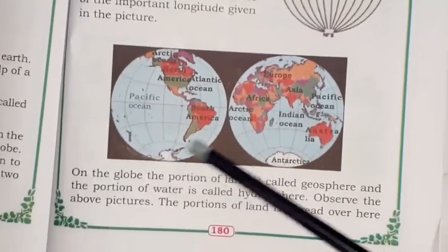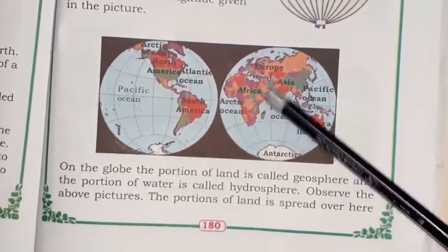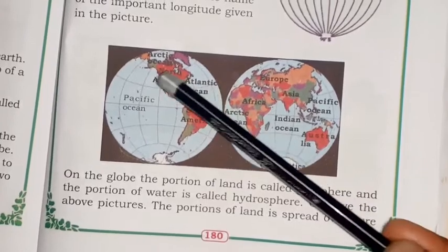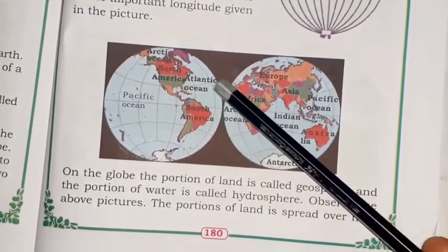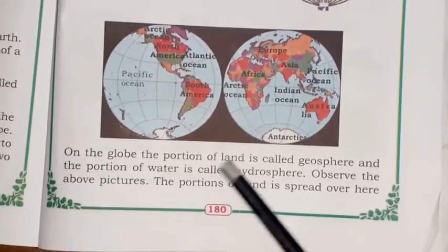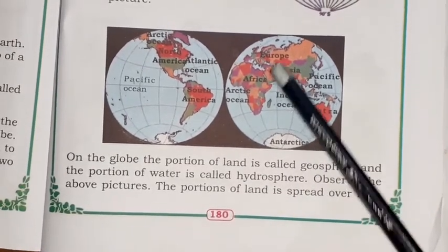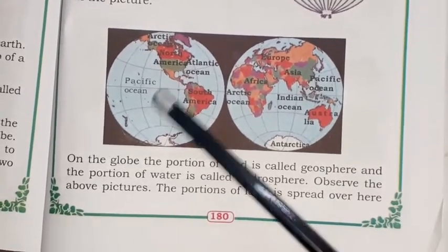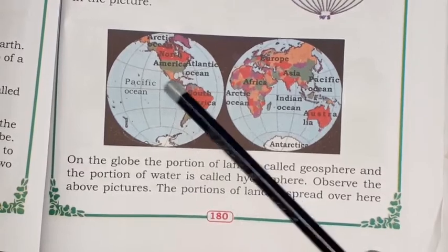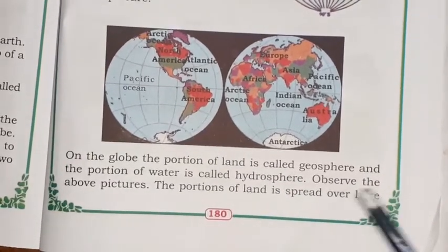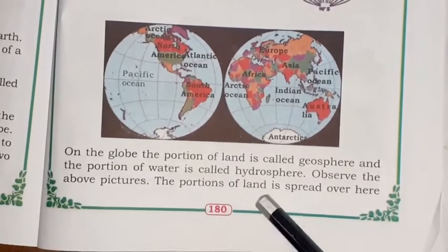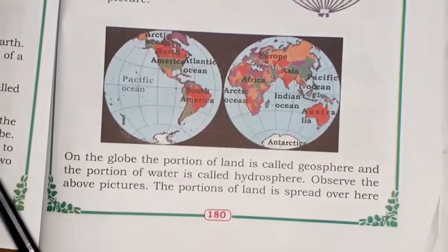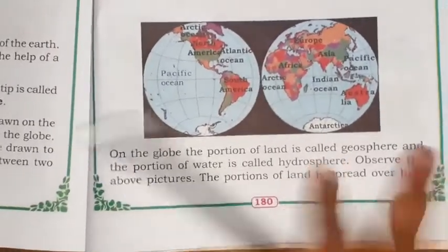Here is a picture of the earth. You can see the water and the land — color the land with brown and green. On the globe, the portion of the land is called the geosphere, and the portion of the water is called the hydrosphere. The portions of land are separate from each other.